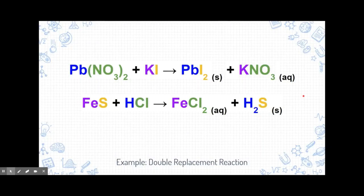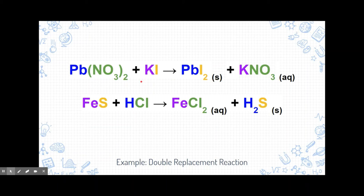Let's look at some examples. Our first example is lead 2 nitrate and potassium iodide. Lead and nitrate are dancing together, and potassium and iodide are dancing together. Lead is positive and iodine is negative, so they go together, and potassium is positive and nitrate is negative, so they pair up — they just switch partners. Our second example is iron 2 sulfide and hydrochloric acid: iron goes with chlorine, and hydrogen goes with sulfur. These are each double replacement reactions where two pairs switch partners.